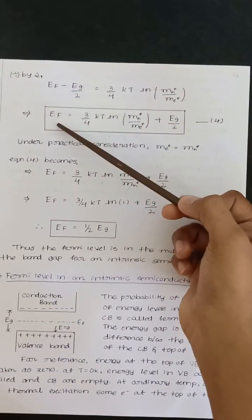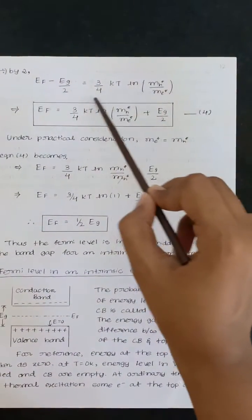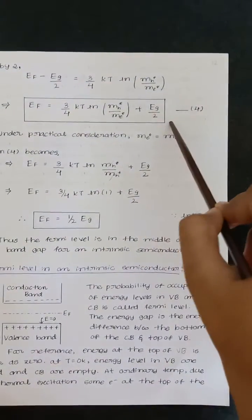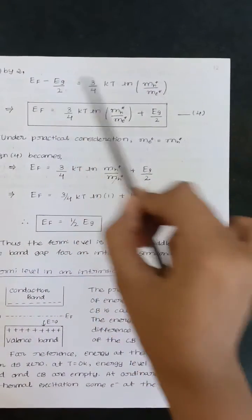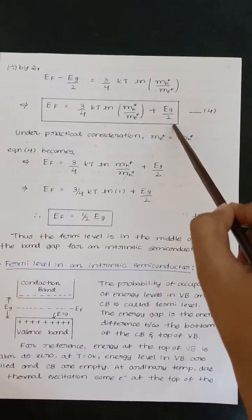Now take EF outside. So you have to write the remaining part. When it comes to here it will become plus EG/2.